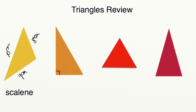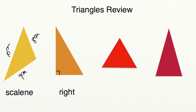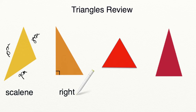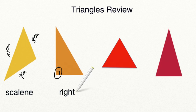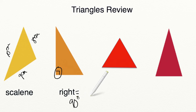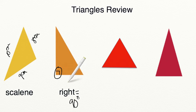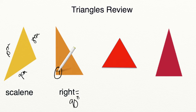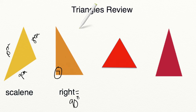Let's go ahead and look at our next triangle. Our next triangle is called a right triangle. It's called a right triangle because it has to have a right angle in the triangle. A right angle is equal to 90 degrees. So the only way that you can have a right triangle is if the triangle has a 90 degree angle marked in the triangle. And you can see that we have it marked by the square that is in the corner, and that lets you know that it's a 90 degree angle.